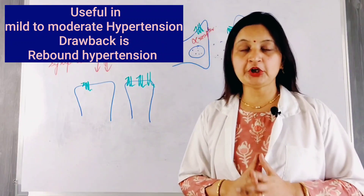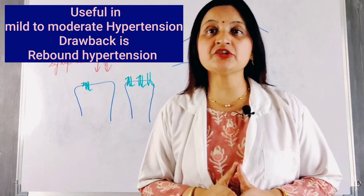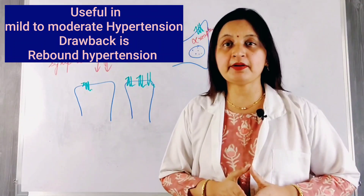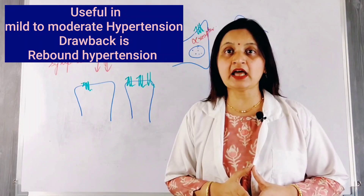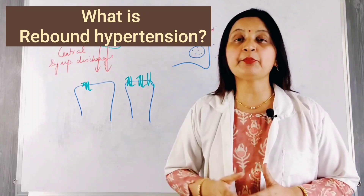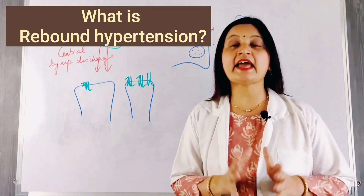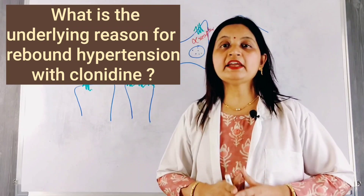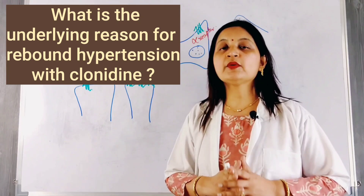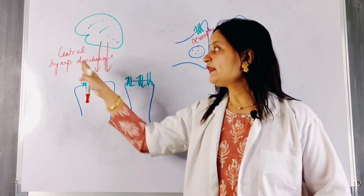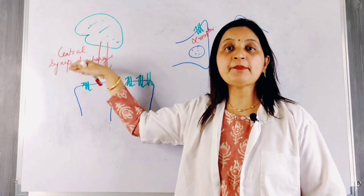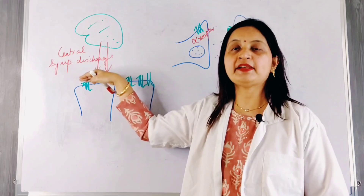Clonidine can be useful in the management of mild to moderate hypertension, but an important drawback is that it can cause rebound hypertension. If one or two doses of clonidine are missed, there is an alarming rise in blood pressure — even higher than pre-treatment values — which can be life-threatening. The underlying reason: in the presence of clonidine, there is inhibition of central sympathetic discharge and inhibition of release of epinephrine and norepinephrine.